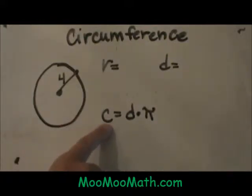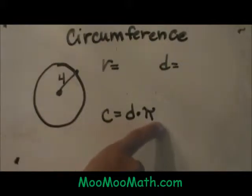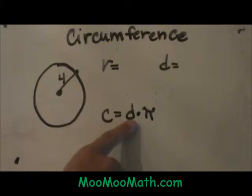Circumference has a formula and circumference is equal to d times pi, or some people write 2πr. I prefer the d·π formula where d is the diameter of the circle and pi is 3.14 or just slightly over 3. Let's do this example.